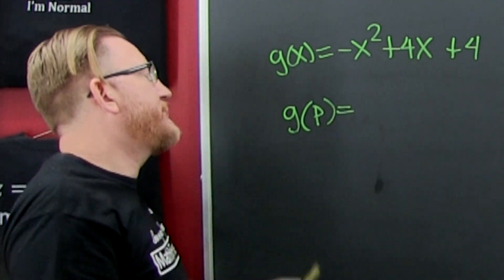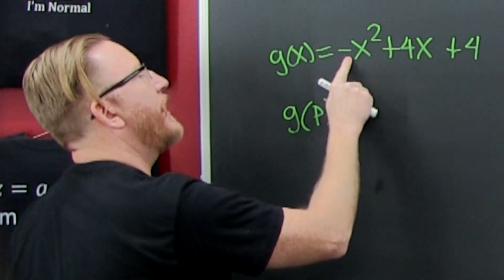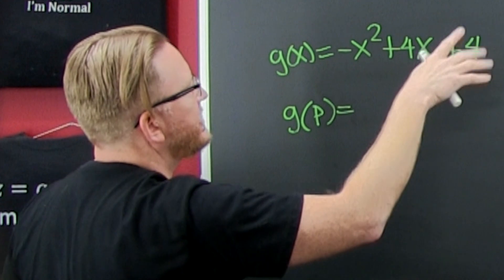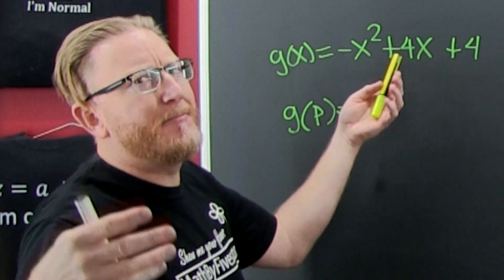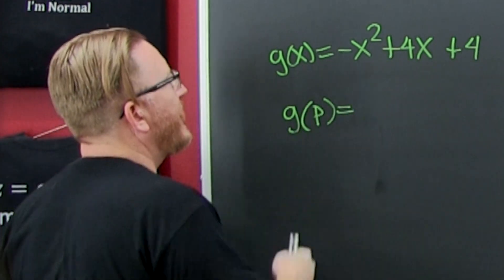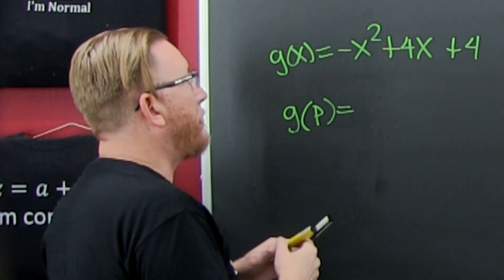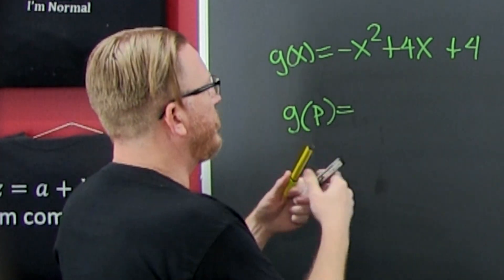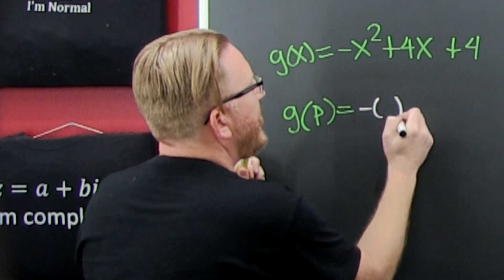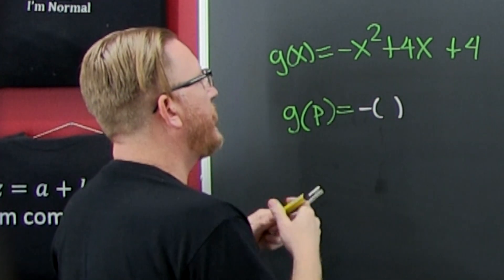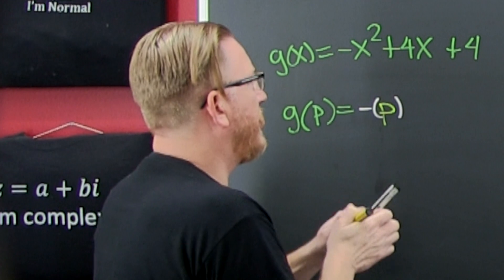I have the function g(x) = -x² + 4x + 4. I want to evaluate it at p, so I'm going to put a p in wherever I see an x.